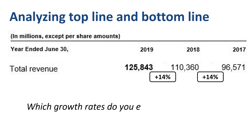Which growth rates do you expect for net income? Growing faster than revenue? Growing at the same rate as revenue? Growing but slower than revenue? Or fluctuating more wildly?